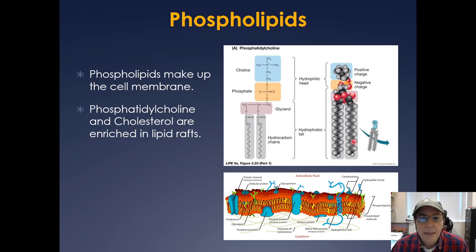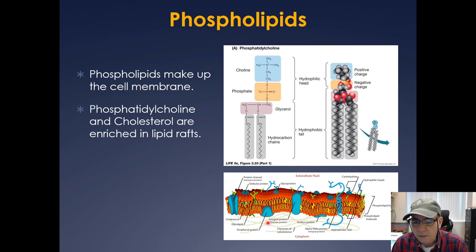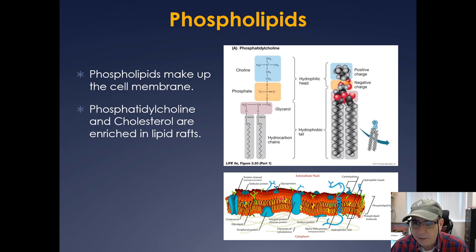Lipids are amphiphilic — they're both hydrophobic and hydrophilic. You have a hydrophilic head group and a hydrophobic tail section. These are only energetically favorable when arranged in a lipid bilayer with two leaflets coming together. This is what helps compartmentalize a cell — it represents the outer cell membrane, and there's also a lipid bilayer separating the ER from the cytoplasm and the Golgi from the cytoplasm. Proteins in the secretory pathway get glycosylated — carbohydrates are added to them — making them glycoproteins.